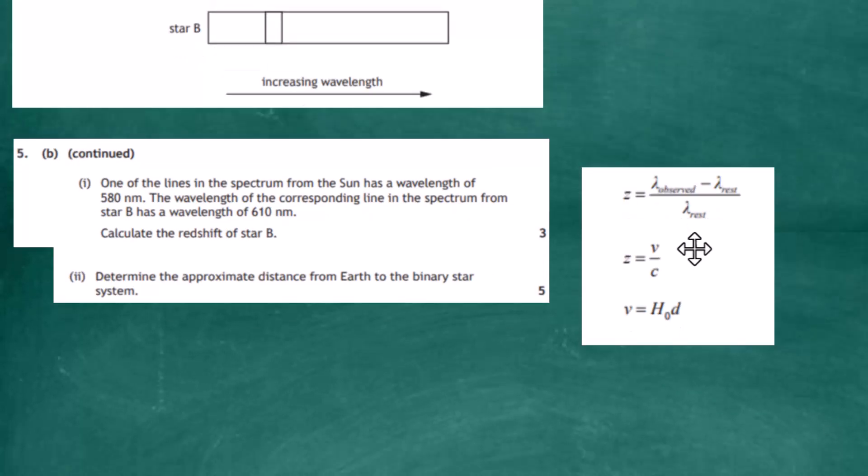Question 5b(i): one of the lines in the Sun's spectrum has a wavelength of 580 nanometers; the corresponding line in star B's spectrum has a wavelength of 610 nanometers. We need to calculate the red shift of star B for three marks. From the relationship sheet, z — the red shift — equals the observed wavelength from the star minus the rest wavelength measured on Earth, divided by the rest wavelength on Earth.